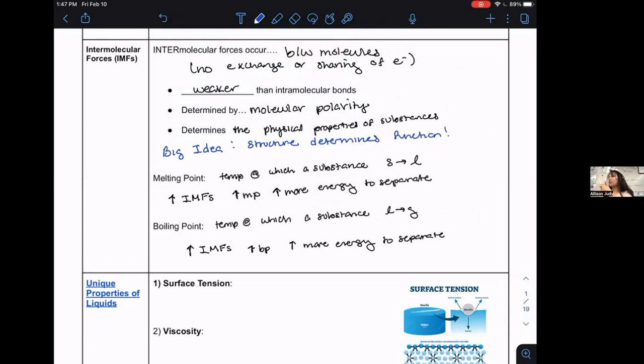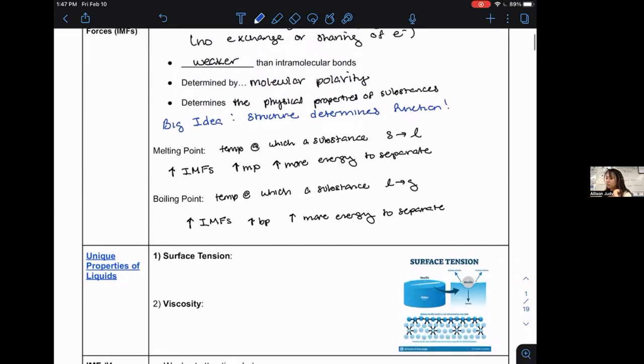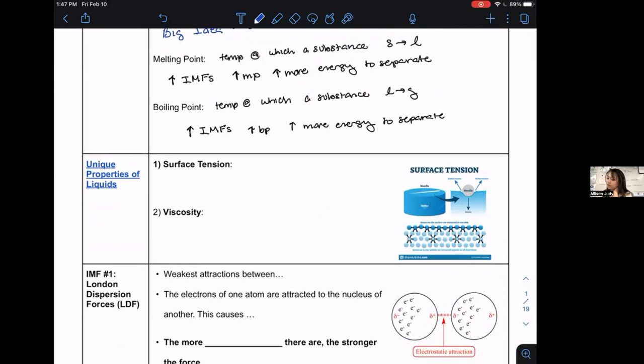Melting point is a function. Boiling point would be like a function. When do you boil? When do you melt? Here's some other functions that are connected to IMF. Surface tension is the resistance of a liquid surface to expansion. Have you ever seen those little bugs that like float on water? Why can bugs float on water? Water has surface tension. Water molecules don't like to separate. They hold on to each other. They're attracted to each other.